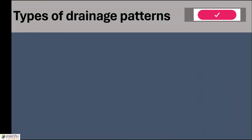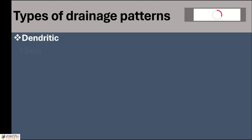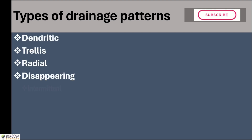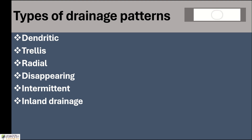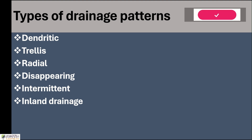We have to study at least these six different types of pattern which were in the older syllabus. These are: dendritic, trellis, radial, disappearing, intermittent and inland drainage. These are the six patterns that we are going to discuss in today's video.